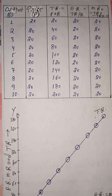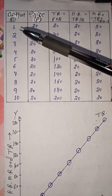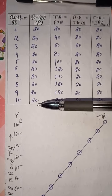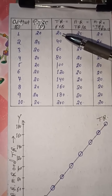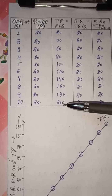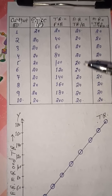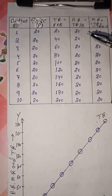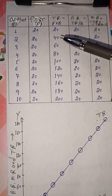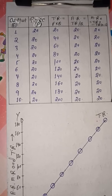This is the table showing the relation among AR, TR, and MR under perfect competition. Output goes from 1 to 10. Price is constant at Rs. 20 per unit since it is perfect competition. TR values: 1×20=20, 2×20=40, 3×20=60, 4×20=80, and so on up to 10×20=200. AR remains constant at 20 throughout. MR for the first unit is 20; for subsequent units: 40−20=20, 60−40=20, 80−60=20, and so on — MR remains 20 up to the last unit.